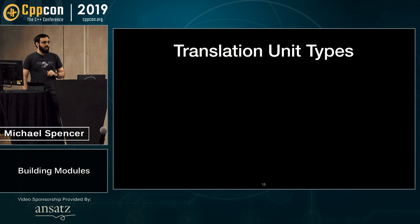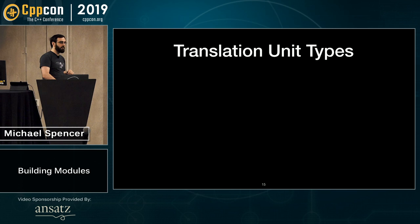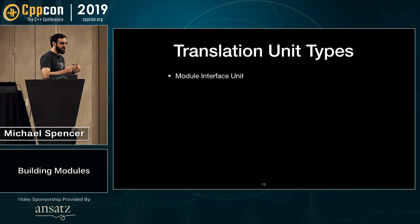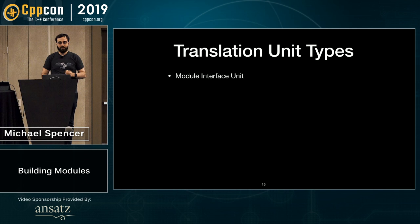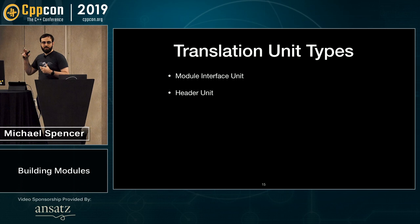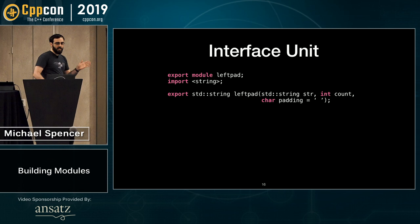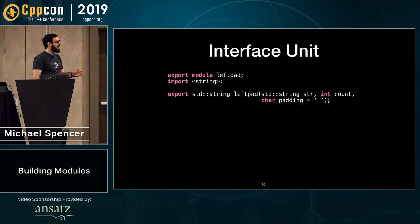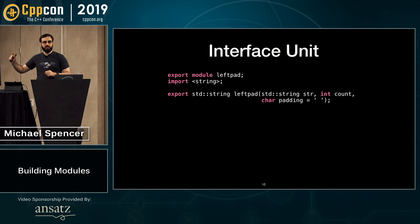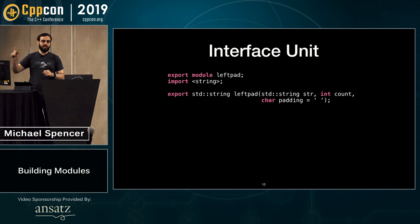Modules add a couple of new translation unit types, which impact how you build things. The first is the module interface unit — there's one per module, and it defines that module's interface. There are also header units, which are normal C++ headers taken and put into their own translation unit. In this example, we have our module left pad, and we import string — this does not textually include string. It compiles string as its own independent translation unit and imports the declarations it contains.